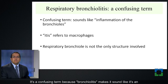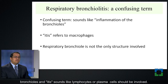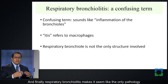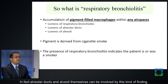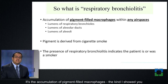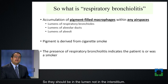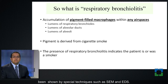The term is actually pretty confusing. Bronchiolitis makes it sound like it's an inflammation of the bronchioles, whereas it actually does not necessarily need to involve bronchioles. And '-itis' sounds like lymphocytes or plasma cells should be involved, but actually the cell of interest is a macrophage. Respiratory bronchiolitis makes it seem like the only pathology should be within the respiratory bronchiole, but actually alveolar ducts and alveoli themselves can be involved. So what really is respiratory bronchiolitis? It's the accumulation of pigment-filled macrophages within any air spaces — within respiratory bronchioles, alveolar ducts, or alveoli. They should be in the lumen, not in the interstitium. This pigment is derived from cigarette smoke and has exactly the particles present in cigarette smoke, which has been shown by special techniques such as SEMEDS.